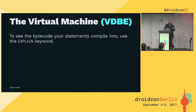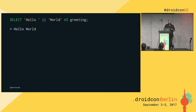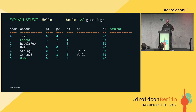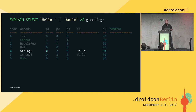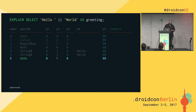To see the bytecode statements your queries would compile into, there's a keyword called EXPLAIN. Start with a really simple example: the statement just concatenates 'world' onto 'hello' and selects that as the greeting. If we throw EXPLAIN in front of it, you can see the actual bytecode. We get the INIT opcode with parameter 2, jumping to line 4 where we take the string 'hello', store it in register 2, take 'world' into register 3, jump back up, concatenate register 3 onto register 2, store that in register 1, and return it as the result row. And then we're done.